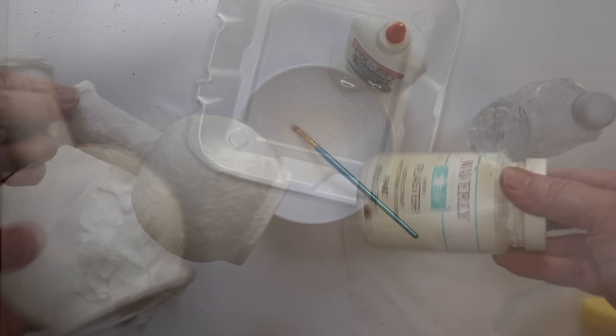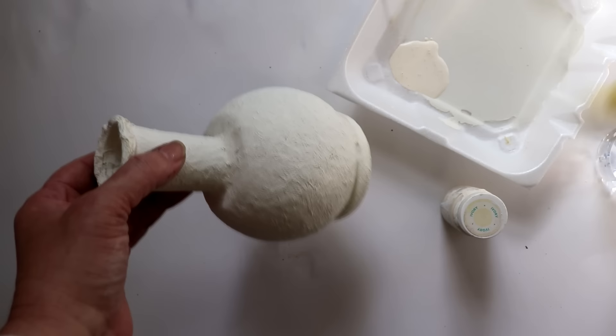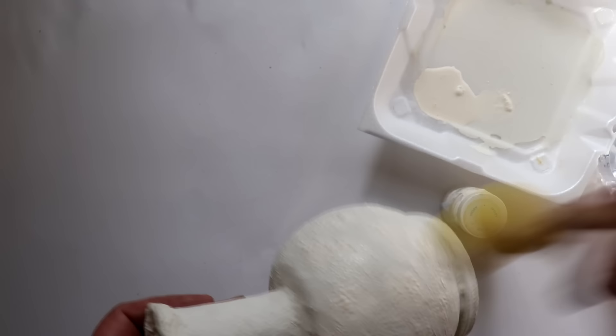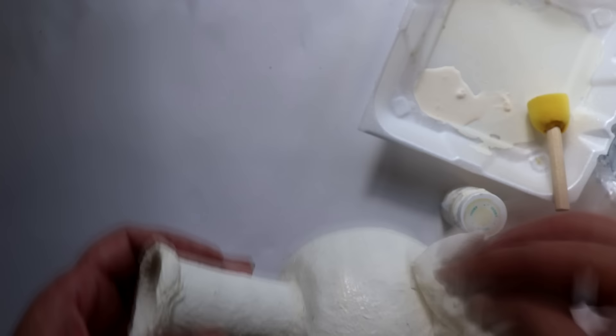Once dry, I painted the gourd with a coat of Waverly chalk paint in the color Plaster. And then once that was dry, I diluted some ivory chalk paint with a little water and then sponged that on sporadically, dabbing with wet paper towel to blend. The two paint colors are very similar, but even just that subtle difference lends some dimension to the finish.